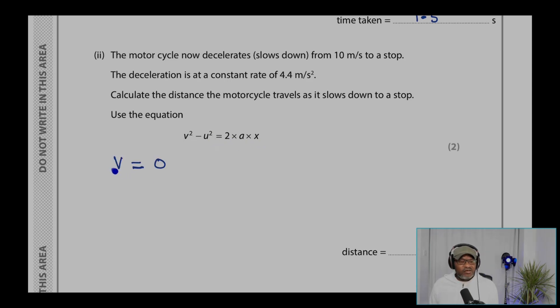where we can say the final velocity is zero. So V is the final velocity and that's zero, and U is the initial velocity, that's 10. A is minus 4.4 because it's a deceleration.